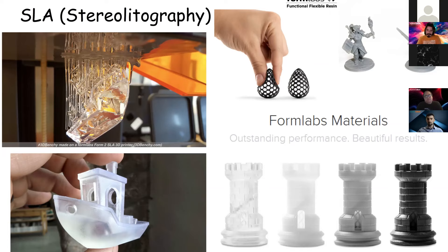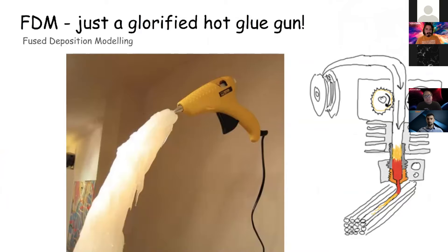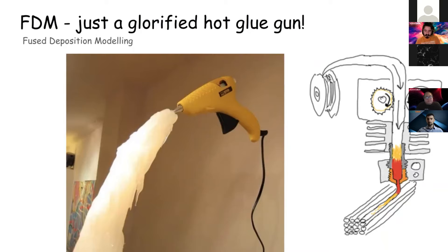These SLA printers are really nice for printing D&D miniatures — you print them, paint them, and you can't tell it was printed; you can't see the layers at all. The most common kind of 3D printing technology is essentially a glorified hot glue gun, called fused deposition modeling, sometimes also called fused filament fabrication — they mean the same thing. The idea is that you have a piece of filament going through an extruder that heats it up and extrudes it in a thin pattern, drawing your object layer by layer.